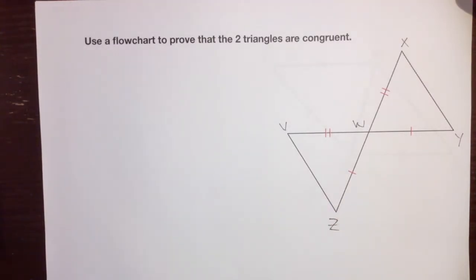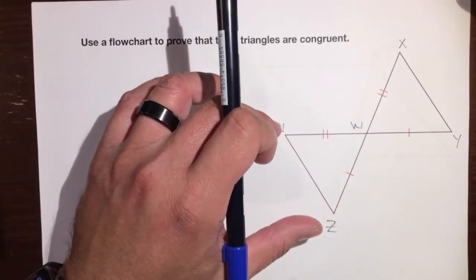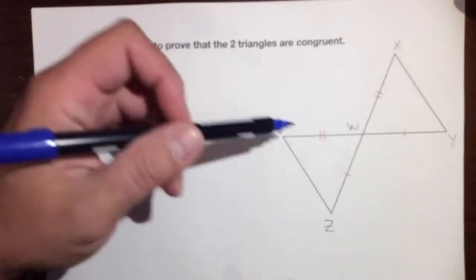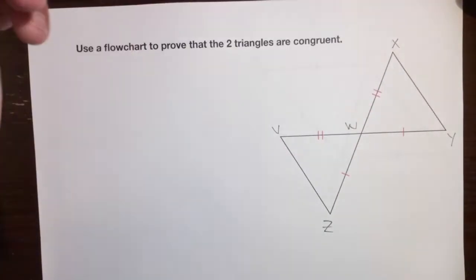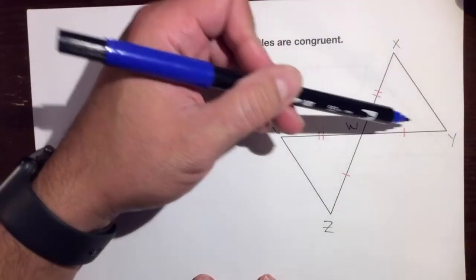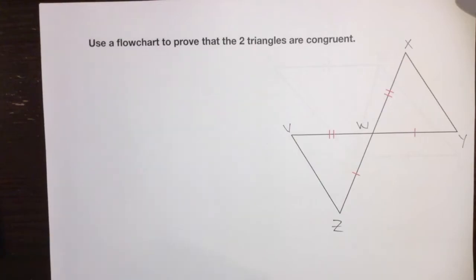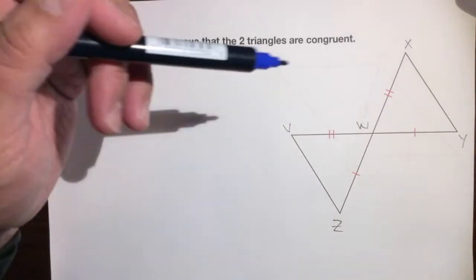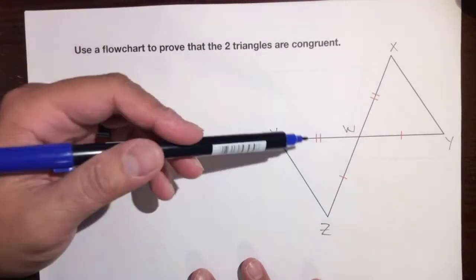Use a flowchart to prove that the two triangles are congruent. Congruency means that if we reflected this triangle, it would fit perfectly on top of the other triangle — all the angles would be congruent, all the sides would be congruent. But we're going to show you that we don't need to do all six; we just need three bubbles.